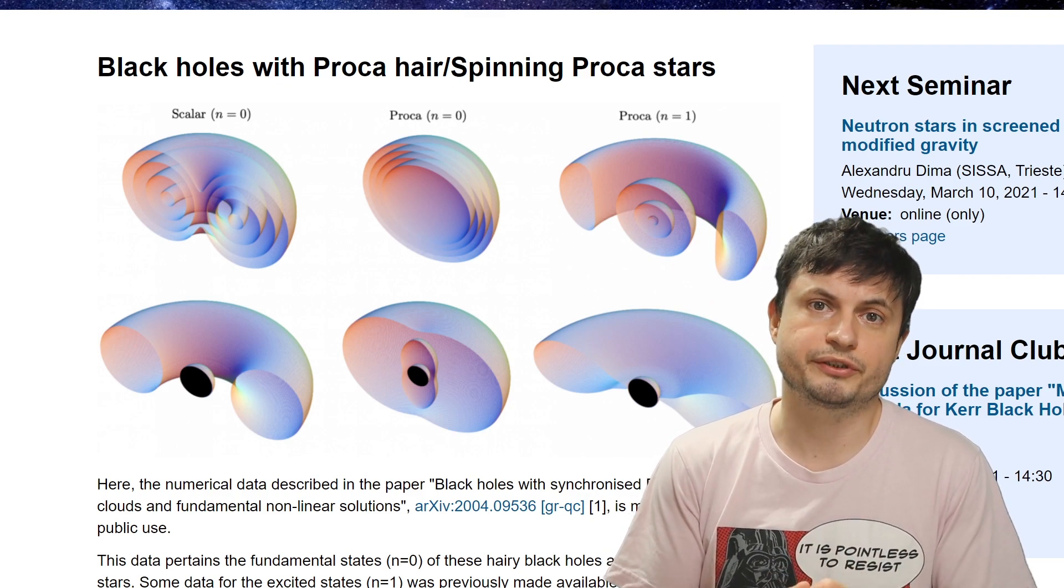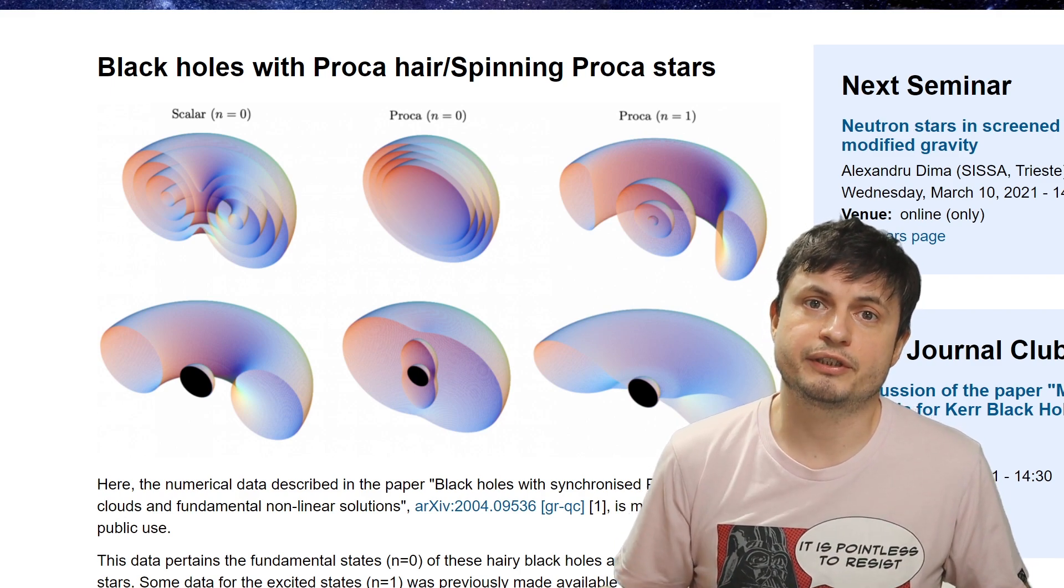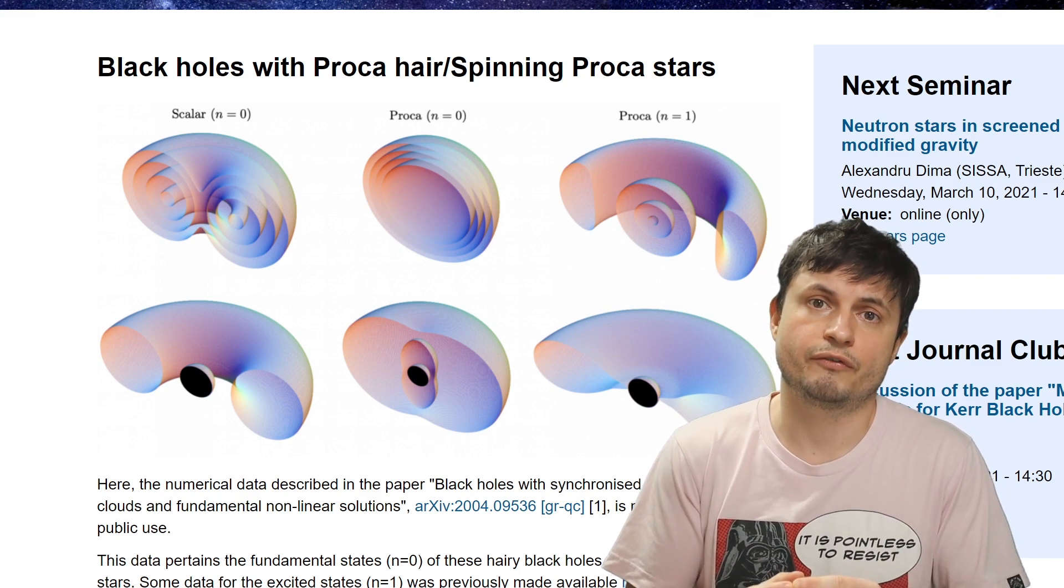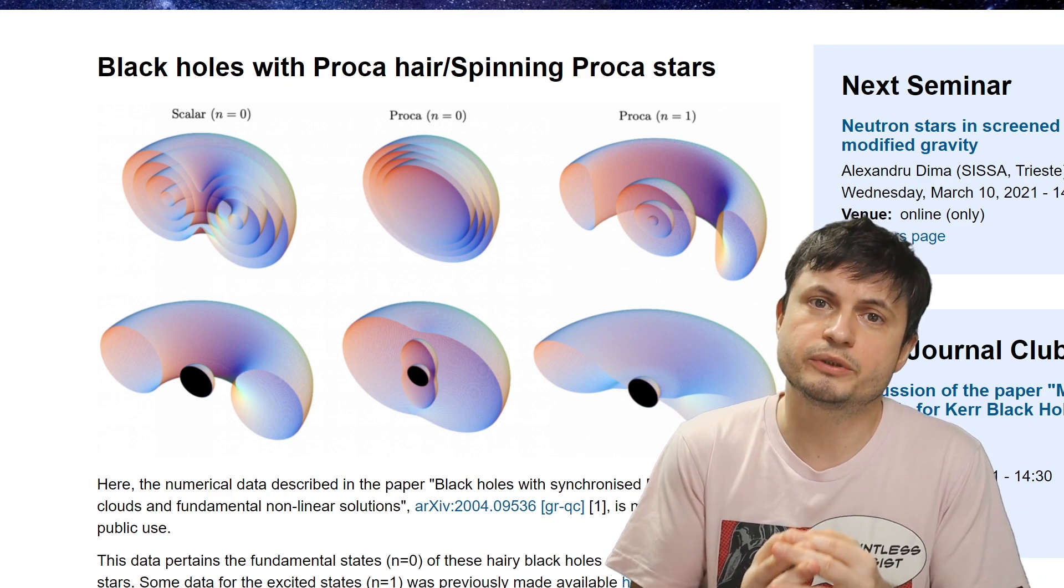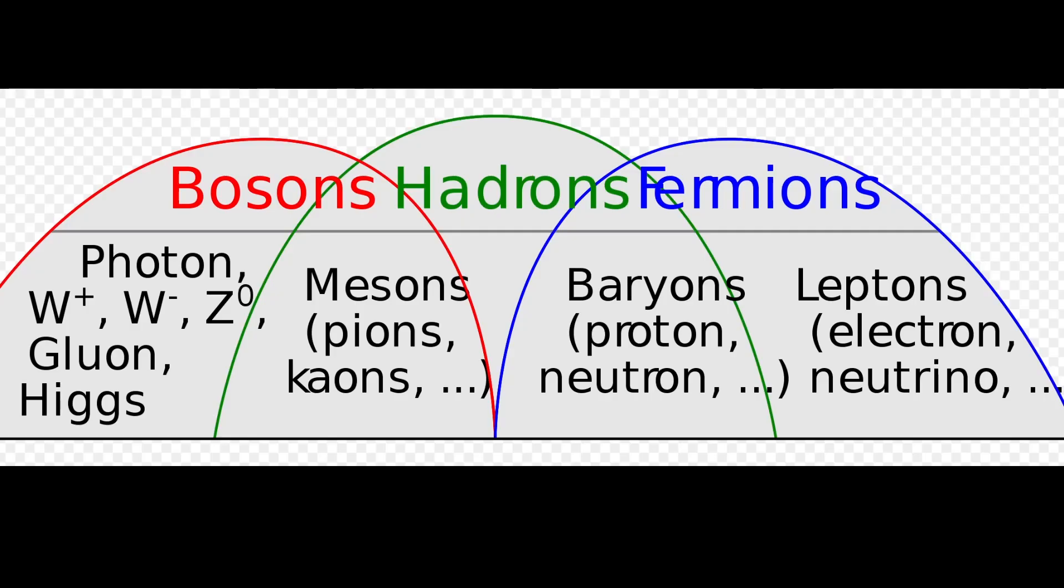But in general, what Proca stars or boson stars could potentially represent are basically types of stars made out of not regular fermion matter. In other words, not really made out of atoms and out of protons and neutrons, but instead are made out of bosons, which are things like, for example, photons of light or even some more exotic particles like mesons, pions, kaons, and Higgs bosons.